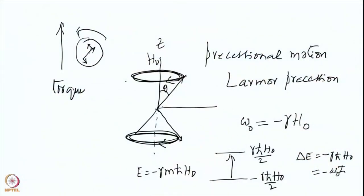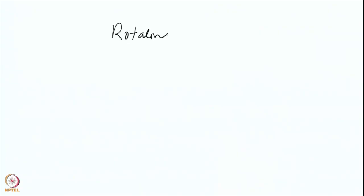Now consider the rotating frame of reference. If you were to sit on the spin and look at the magnetic field, the nuclei would not see the field at all. Going into the rotating frame of reference means sitting on the spin and looking at the magnetic field — if you are rotating with it, it appears stationary. So in the rotating frame, there is no effective H-naught field because the spin is not moving relative to you.